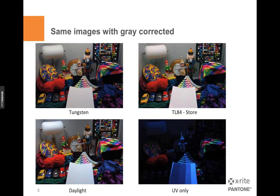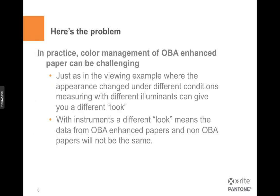If we take that to the extreme and turn on just a UV source, now we can see that there's a big change in the papers. The one on the right obviously has much more OBA content in it and thus looks brighter. In real life it looks brighter as well. There are also a few objects in there that must have some fluorescent dyes or colorants in them because they're picking up from that UV. OBAs work through fluorescence — they absorb energy in the UV range we can't see, then re-emit it into a range that we can see. This OBA effect makes papers look whiter and brighter under some light sources, but then there's a problem as well.